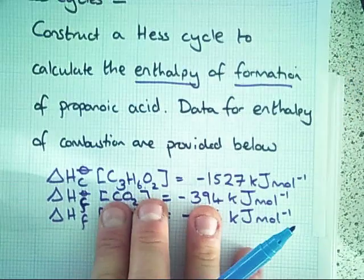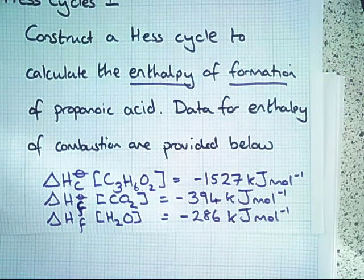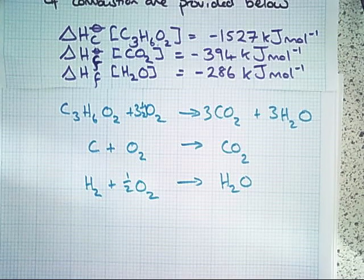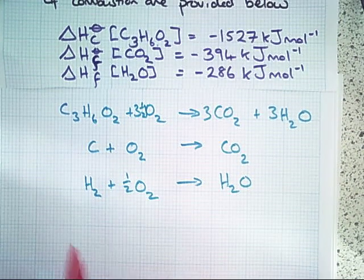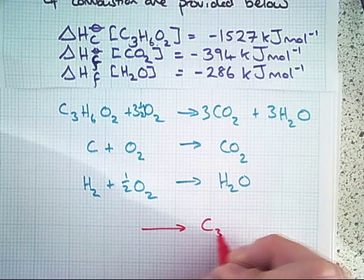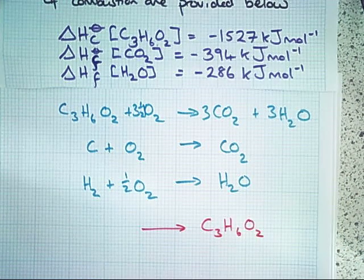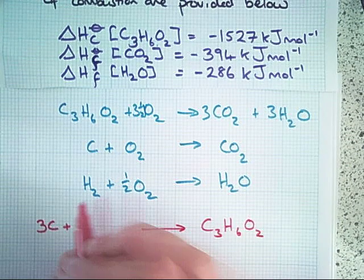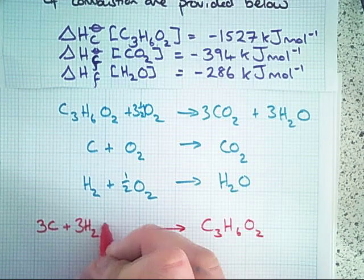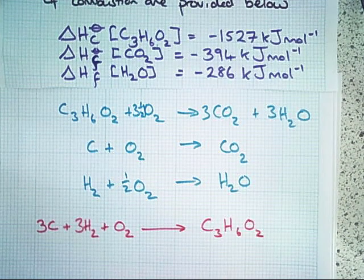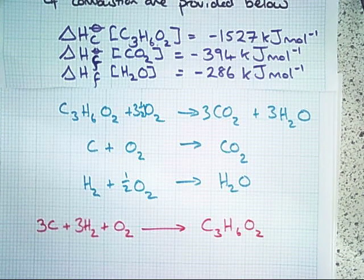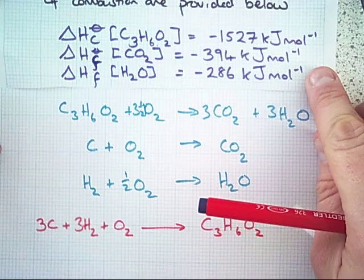We can now look back at the question to find what we're actually trying to find — in this case, the enthalpy change of formation of propanoic acid. This will be the top equation in our Hess cycle triangle. Enthalpy change of formation of propanoic acid involves three moles of carbon, three moles of diatomic hydrogen, and diatomic oxygen reacting together. Enthalpy changes of formation are theoretical values; it's not experimentally possible to carry out this reaction, so we need to calculate it from Hess cycles.